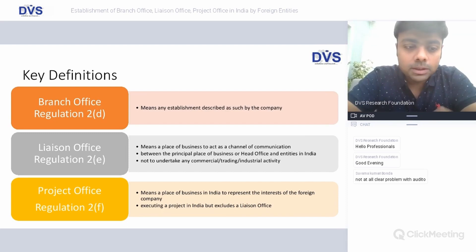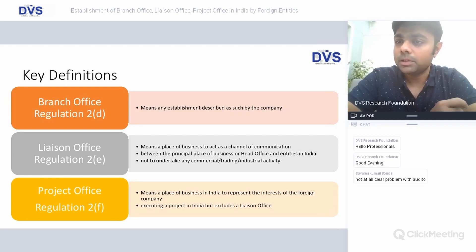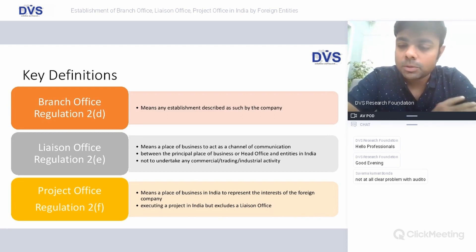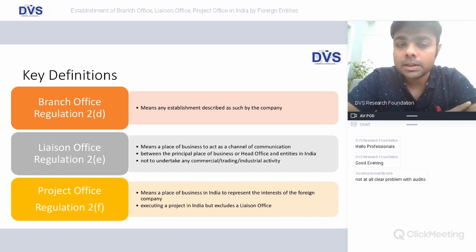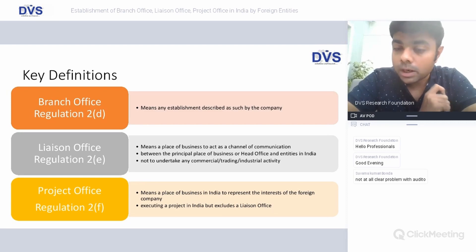A liaison office is an interesting concept introduced mainly when people do not have a commercial activity per se, but are trying to test waters, do market study, or establish communication. The fundamental purpose of a liaison office is to act as a channel of communication between the principal business or headquarters and its entities in India. However, a liaison office is not expected to do any commercial activity — it is only considered to be an extension arm for communication and cannot undertake commercial activity.